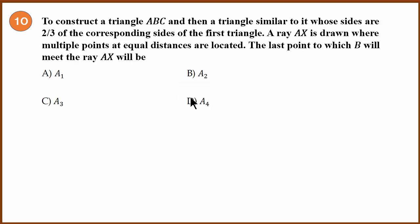Last question. To construct ABC, then a triangle similar to it whose sides are 2 is to 3 of the corresponding sides of the first triangle. Scale factor is 2 is to 3, 2 by 3. A ray AX is drawn where multiple points at equal distances are located. Then the last point to which B will meet the ray AX will be...